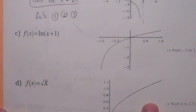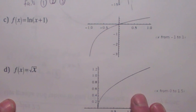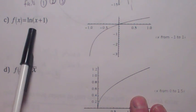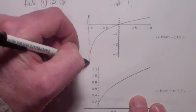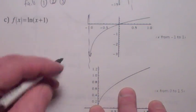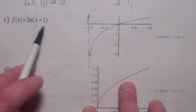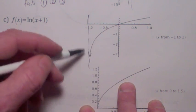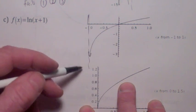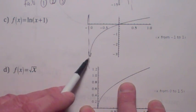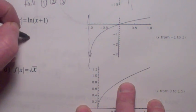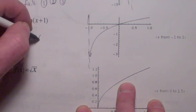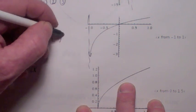It's hard to find functions that aren't continuous on their entire domain. Look at the natural log of x plus 1. Its domain is from negative 1 to infinity. It's continuous everywhere on that domain. Certainly it's not continuous at negative 1 because it's not even defined there, but it is continuous on its domain — continuous on negative 1 to infinity.